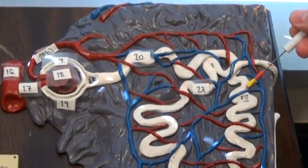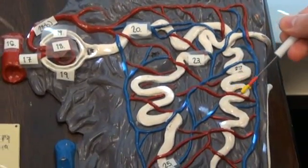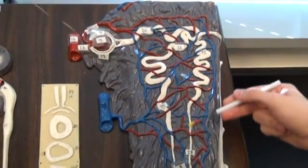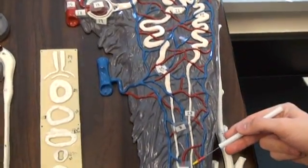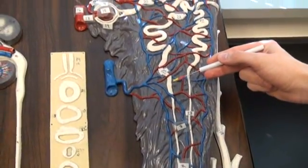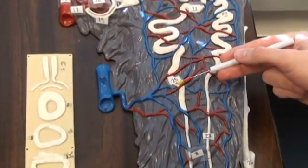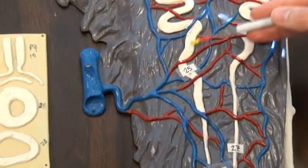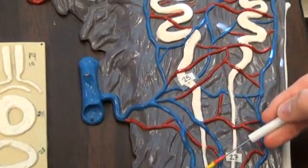And that leads to your descending limb of the nephron loop, and here you see your thick and thin regions. If we follow this up, we reach 25, which is the ascending limb of the nephron loop. Here is your thick region of the ascending limb, and here would be your thin.